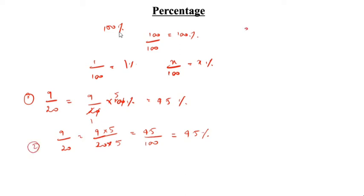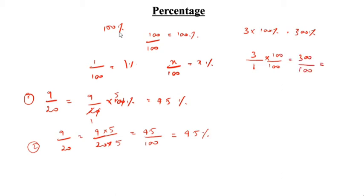Now, the number 3. So, 3 into 100 percentage is equal to 300 percentage. Another method for 3: denominator you write as 1, multiply by 100 to get 100. So numerator also multiply by 100. So, 300 divided by 100 is equal to 300 percentage.